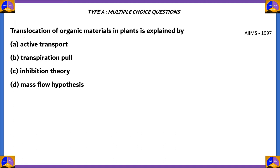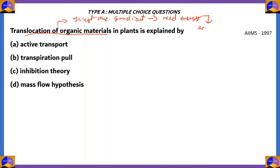Let's look at the question in general. This is talking about the translocation of organic materials. When organic materials are transported into the phloem from the leaves, they move against concentration gradient. And for that, they need energy, which is provided by active transport.